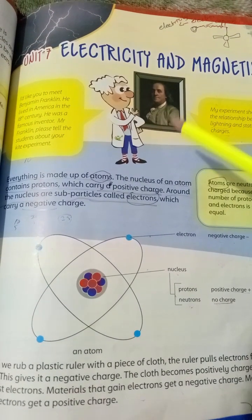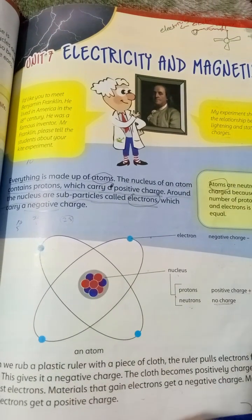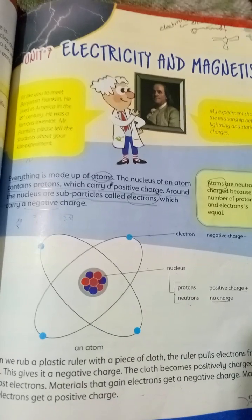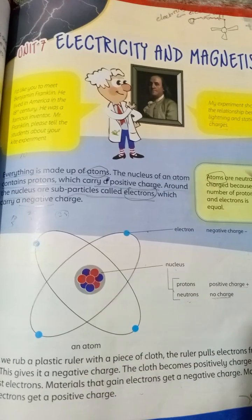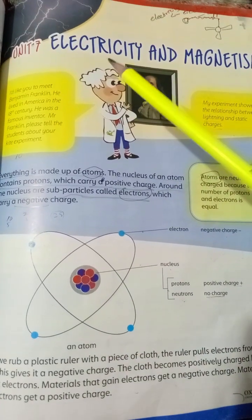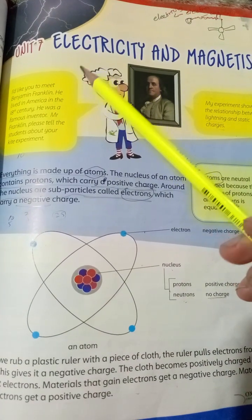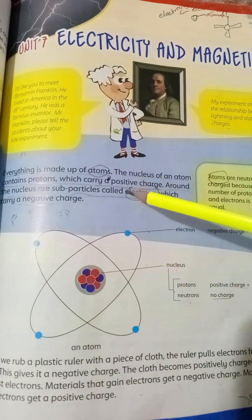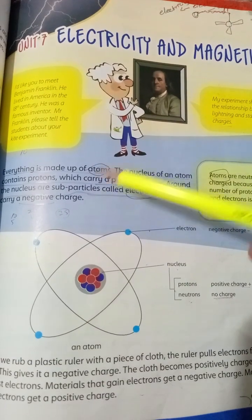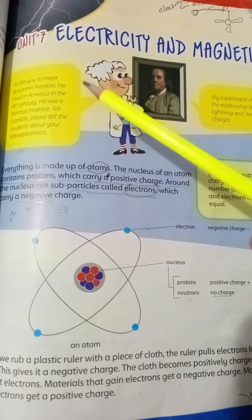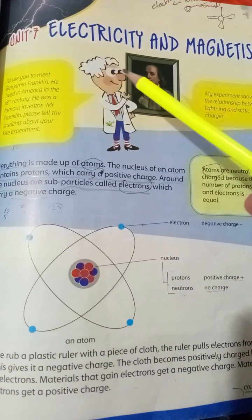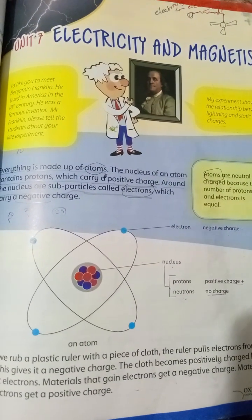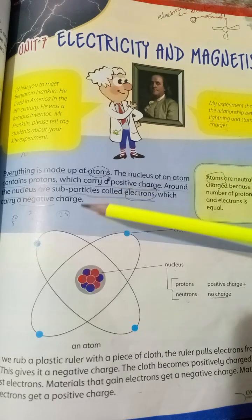Assalamualaikum students of grade 5, how are you all? I hope you all are doing well and happy. Today we are going to underline some of the important MCQs from unit 7, which is about electricity and magnetism.